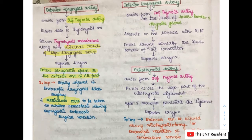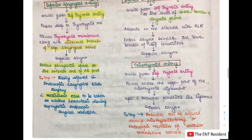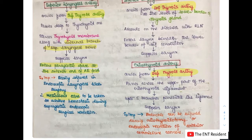The inferior laryngeal artery arises from the inferior thyroid artery at the level of the lower border of the thyroid gland. It ascends on the trachea with the recurrent laryngeal nerve and enters the larynx behind the inferior constrictor. The cricothyroid artery, also a branch of the superior thyroid artery, passes across the upper part of the cricothyroid ligament and supplies the larynx. It has up to five branches which penetrate the ligament and can be injured during cricothyroidotomy or endoscopic resection of anterior commissure cancers.